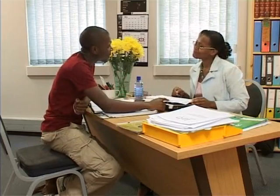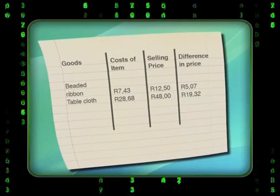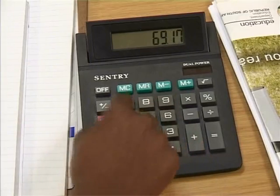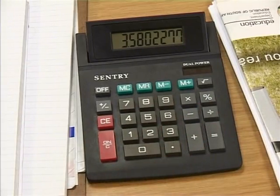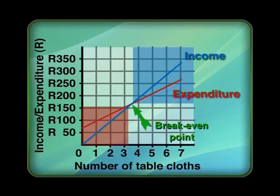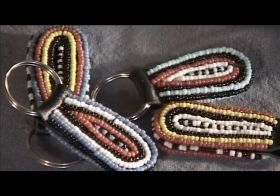That confirms what we have in the graph. Madi has to sell between 13 and 14 ribbons before she reaches her break-even point. Well, for the tablecloths, the difference in cost and selling price is 19 rand and 32 cents. In order to calculate the number of tablecloths Madi needs to sell, I will take 69 rand and 17 cents and divide it by 19 rand and 32 cents. I get an answer of 3.58. This confirms that the break-even point lies between 3 and 4 tablecloths on the graph. That means Madi must sell more than 4 tablecloths in order to make a profit. Now you understand that she has to sell a different quantity of each of her items to pass the break-even point because their selling prices are different.